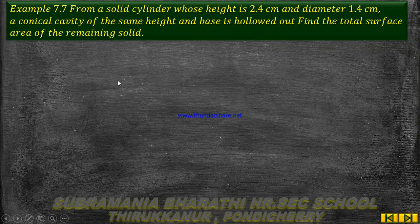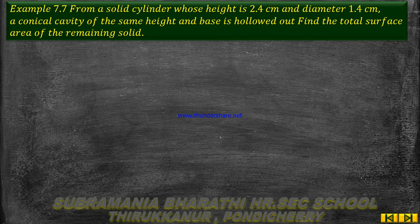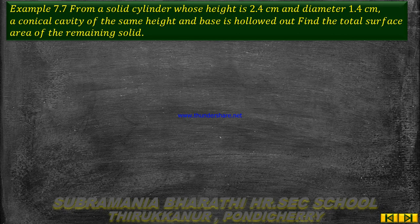Example 7.7: From a solid cylinder whose height is 2.4 cm and diameter is 1.4 cm, a conical cavity of the same height and base is hollowed out.